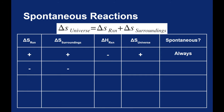Let's look at the counter example. Let's say the delta S of a reaction is negative and the delta S of the surroundings is also negative. The delta S of the surroundings being negative means your reaction is no longer exothermic — it's endothermic, with a positive delta H. Well, if your delta S of reaction is negative and your delta S of surroundings is negative, the delta S of the universe must also be negative, which means that these reactions will never spontaneously happen.